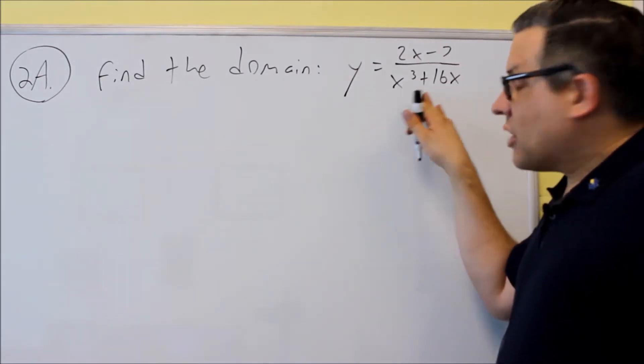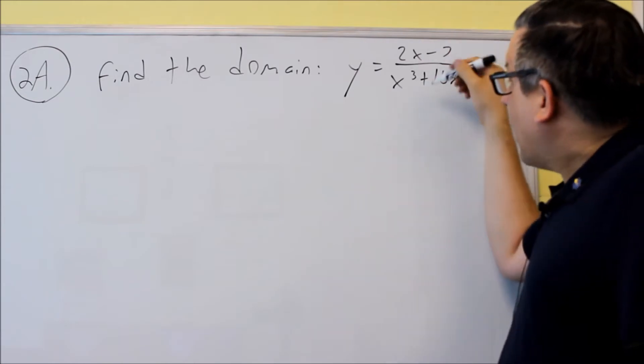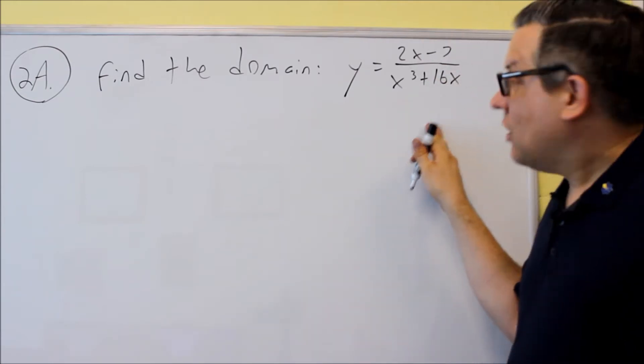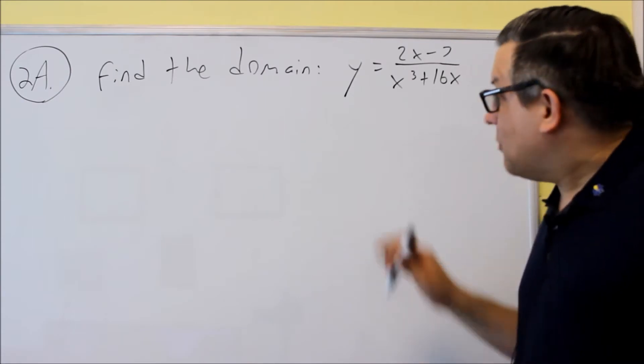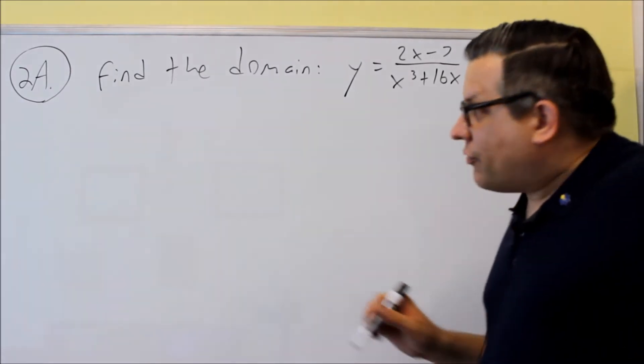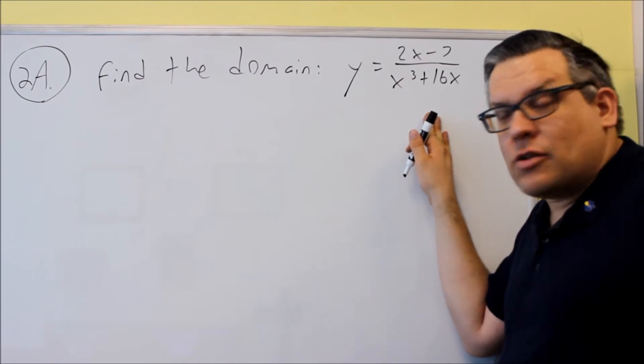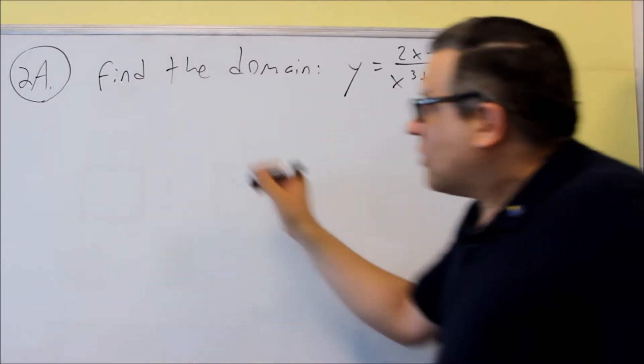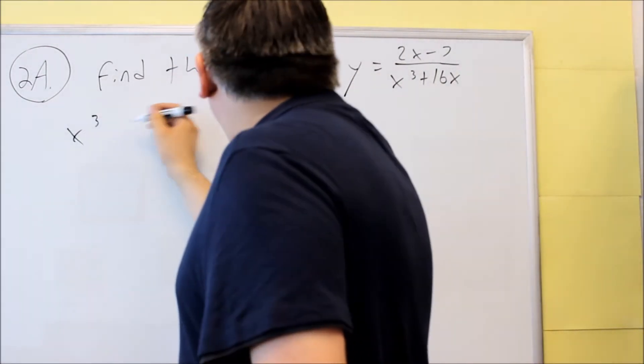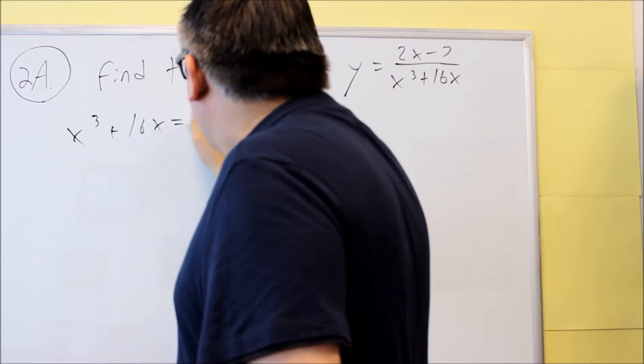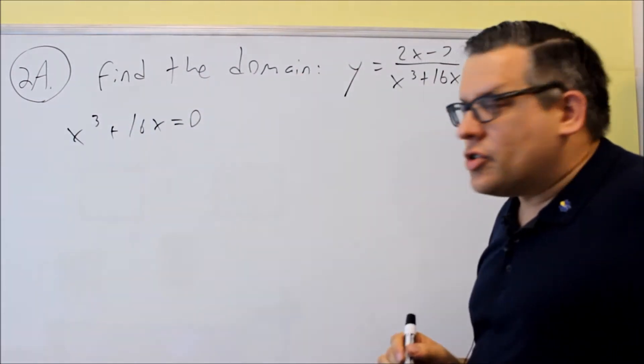With this, because I have a rational right here, I have a fraction, you're going to take the bottom and you know the bottom is not allowed to be equal to zero. So first, I'm going to set the bottom equal to zero to figure out if there's any values that will make this undefined. So x cubed plus 16x, I'm going to set that equal to zero.